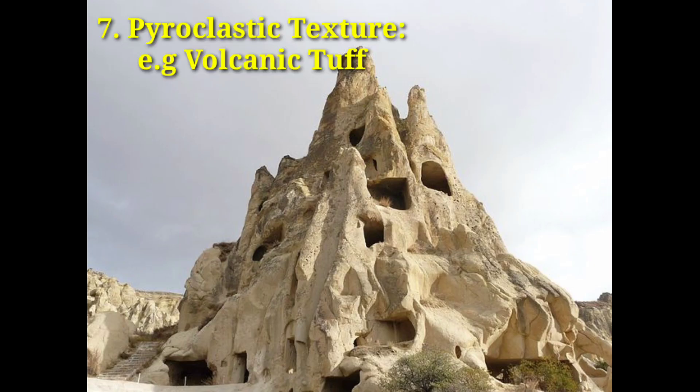7. Pyroclastic texture. Volcanic tuff ring. Rocks with pyroclastic texture are made of pieces of volcanic material that are created in an explosive eruption, like this welded tuff.